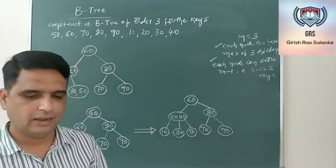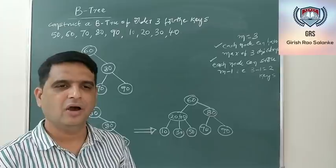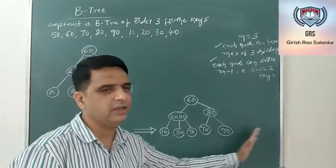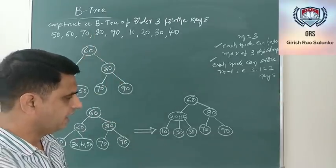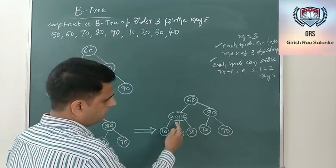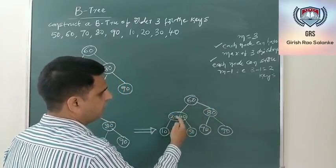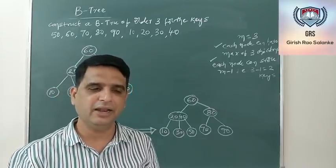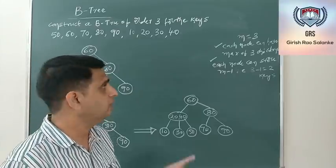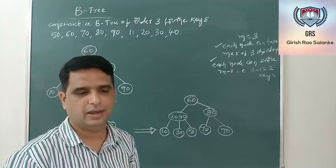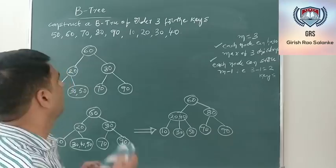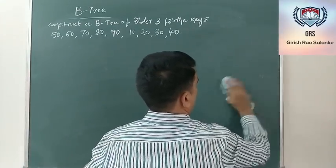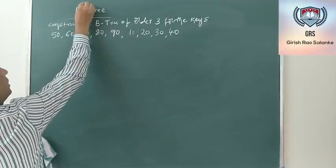Now let's quickly go for the other data structure: B+ tree. B+ tree is almost similar to B-tree, but the key difference is that in a B+ tree all the keys have to be present at the leaf node. In the B-tree we just built, the non-leaf nodes contain keys like 60, 20, 40, and 80, but in a B+ tree all keys must be present at the last level. I will take the same example and construct a B+ tree.